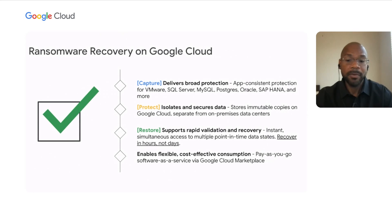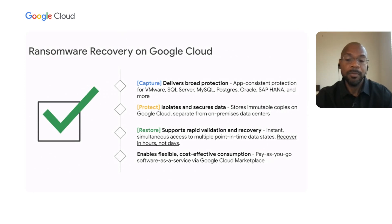With traditional backup and recovery products, accessing the stored backups can be a very time-consuming process, with each copy needing to first be moved to hot storage and transformed to an application-readable format. Needing to perform this move-and-transform process sequentially before each backup inspection can extend the recovery process for days. With the Google Cloud solution, however, your security teams can obtain instant access to multiple point-in-time data states in parallel, without needing to move or transform them, because we store the data in its natively application-accessible format. In this way, you can implement a solution with an expected recovery time measured in hours, not days.